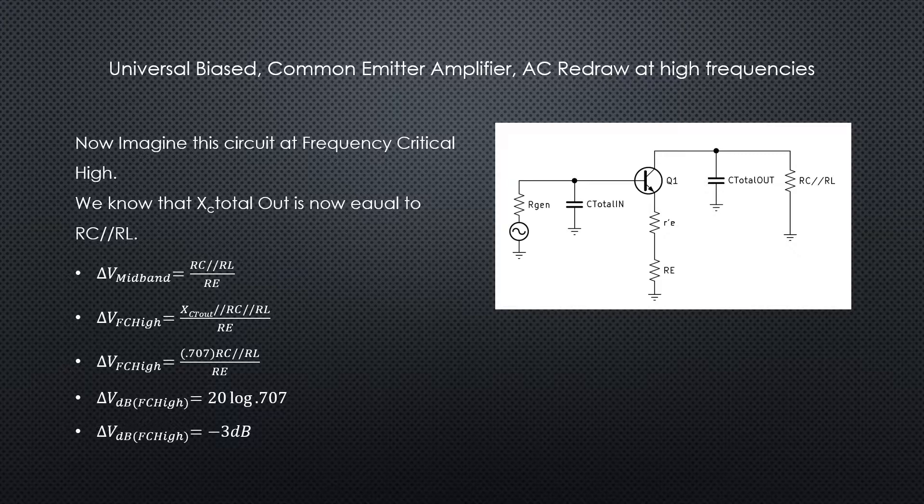We also know that x sub c is at negative 90 degrees. So if we bring those together we get something equivalent to 0.707 times the original resistance—those two in parallel will be equal to 0.707 times that original resistance.